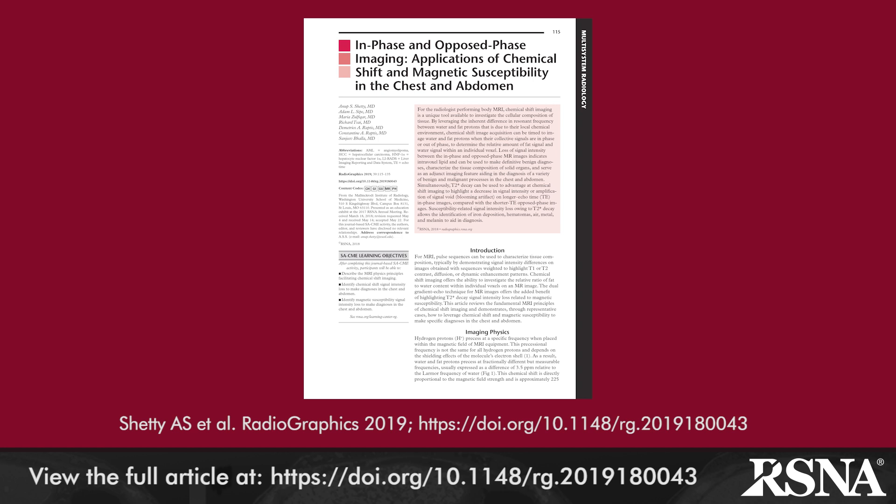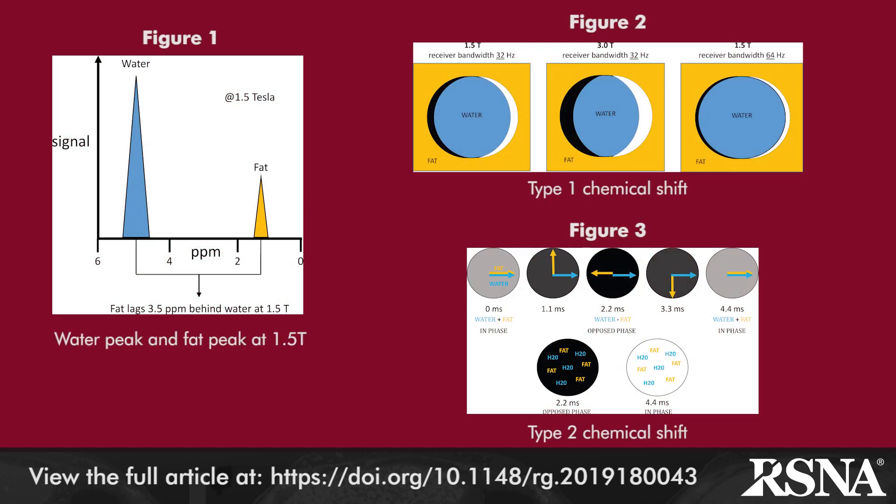This article in the current issue of Radiographics, from Anup Shetty and authors from the Mallinckrodt Institute of Radiology, begins with a brief review of the physics underlying type 1 and type 2 chemical shift, with type 2 chemical shift on gradient echo imaging showing intravoxel fat and water as signal cancelling on opposed phase images at a TE of 2.2 milliseconds, as compared to the additive signal seen on in-phase images.